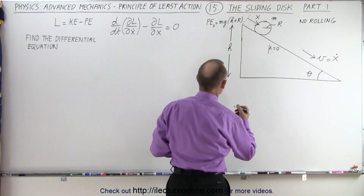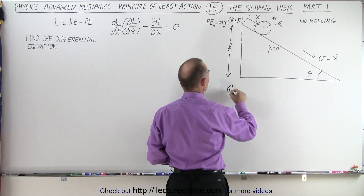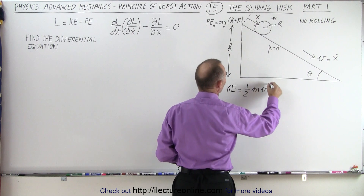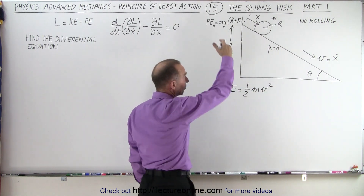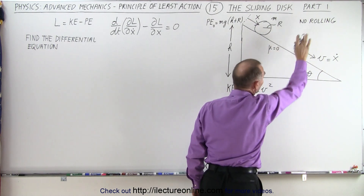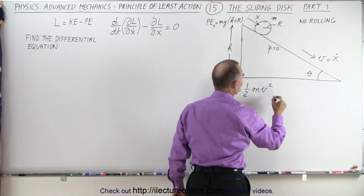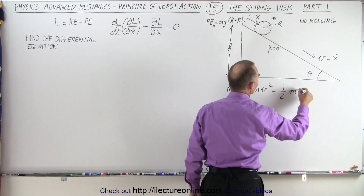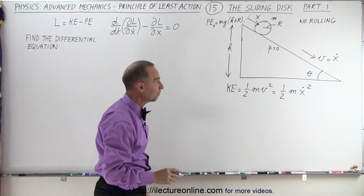Let's start with kinetic energy. Kinetic energy by definition is equal to one-half the mass times the velocity squared. In this case, since there's no rolling, the velocity as the disk slides down the hill is equal to x-dot. So the kinetic energy is equal to one-half times the mass times x-dot squared.